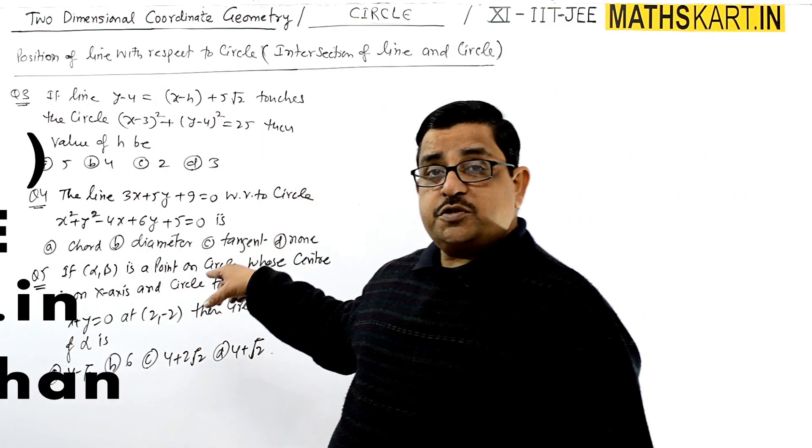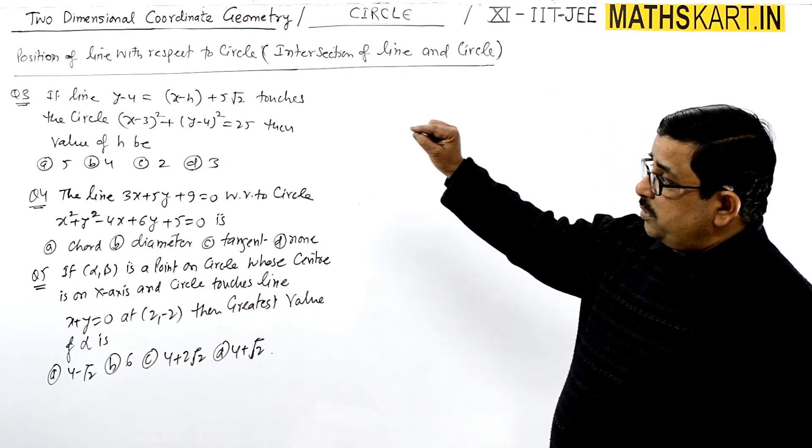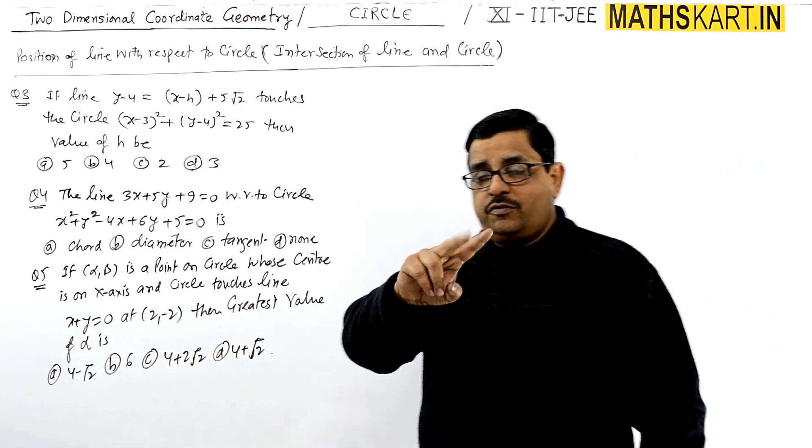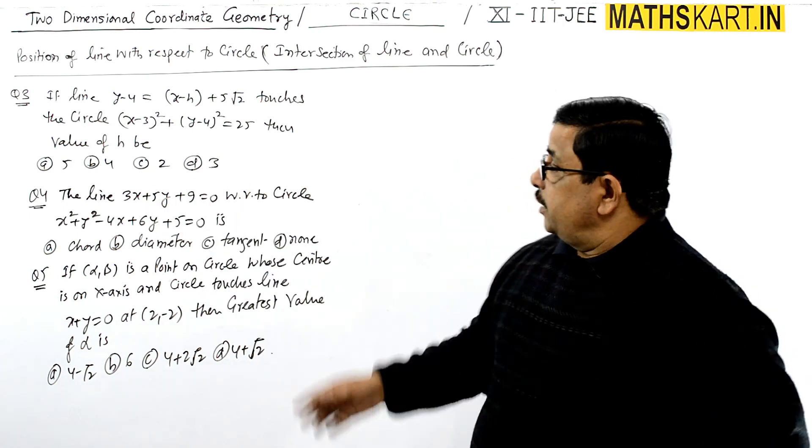See, there are three last questions based on position of line with respect to circle. Question number 3, 4 and 5. Question number 1 and 2 we have already done in the previous videos.